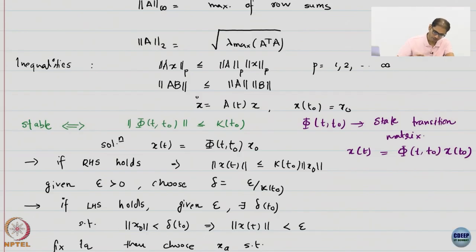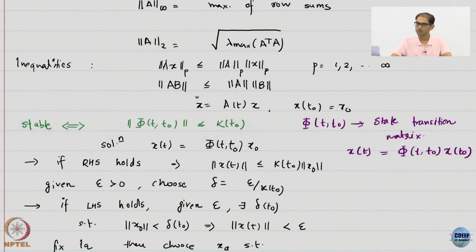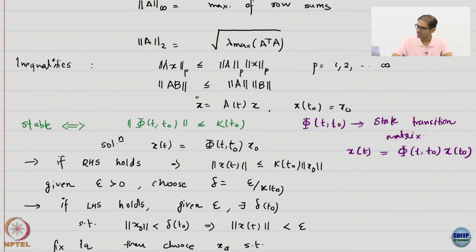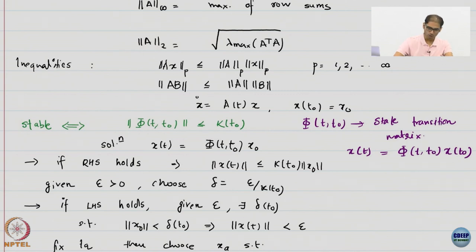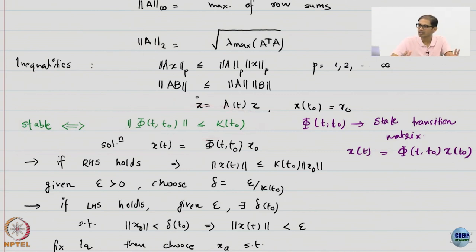We specified this condition for stability for linear systems, which is connected to the state transition matrix. Let us see how to prove it — we are saying this is equivalent. In a lot of linear systems books you will not see epsilon-delta definitions, but you will see this as the definition for internal stability.